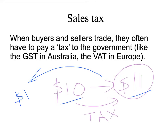From the buyer's perspective they've paid eleven dollars — that's what's gone out of their pocket at the cash register. From the seller's perspective they've only received ten dollars — that's what they get to keep with the government taking a dollar.